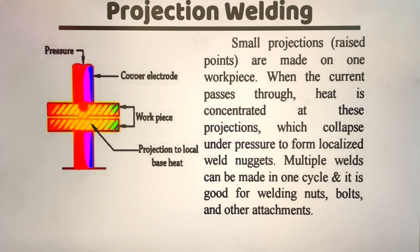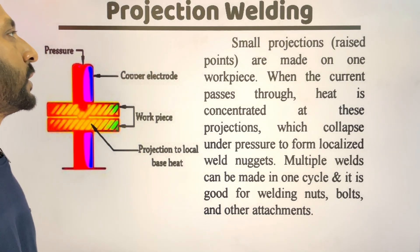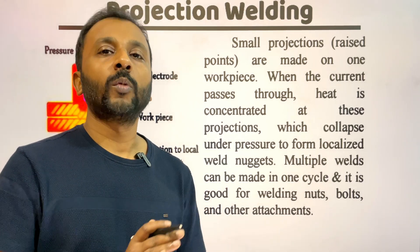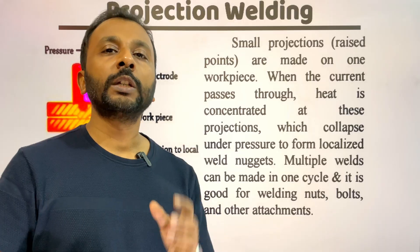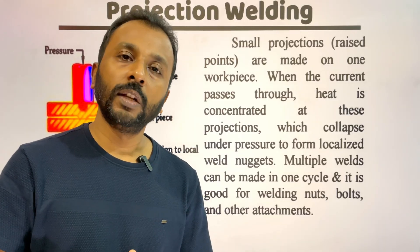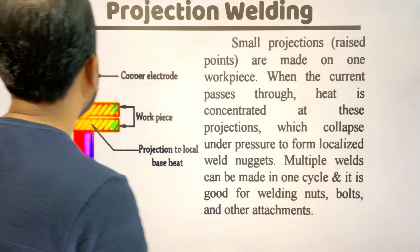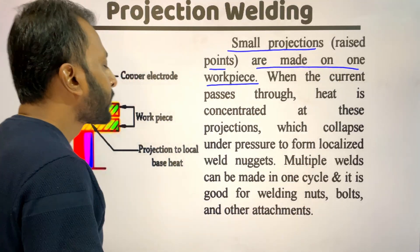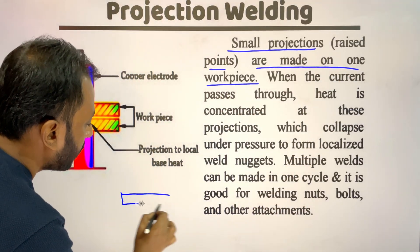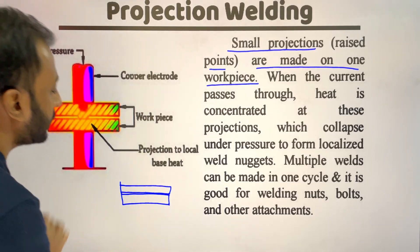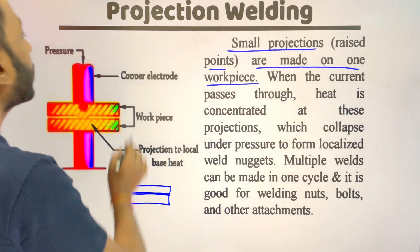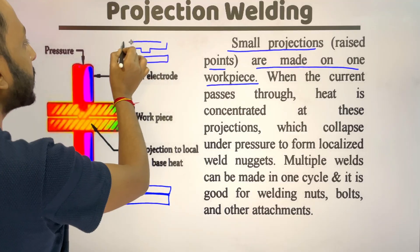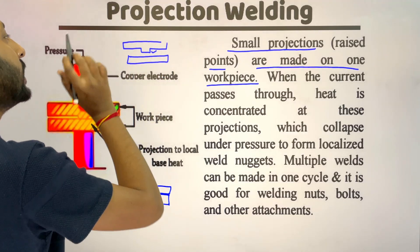The next type is projection resistance welding process. This is a type of spot welding but different in the work pieces used. The setup is the same, but the work pieces are different — this process is a little different. First, small projections or raised points are made on one work piece. In spot welding, the metal pieces were flat thin sheets, but in projection welding one metal sheet is flat while the other has raised surfaces — these are called projections.